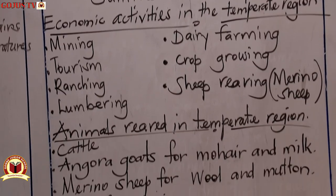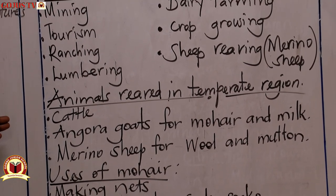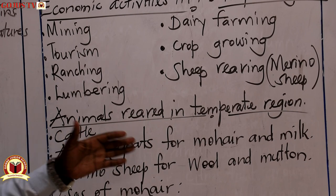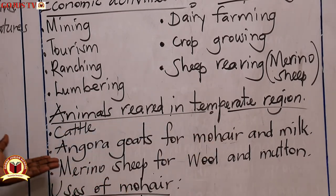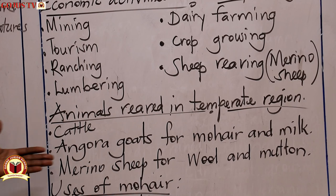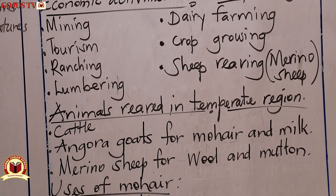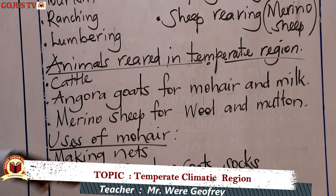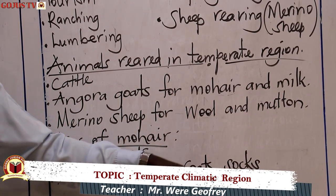Animals reared in this region include cattle. We have angora goats, which are basically for mohair and milk — they give a lot of milk. We have the merino sheep, which are basically for wool and mutton. Now, what are some of the uses of mohair? From mohair we make nets, sweaters, crops, coats, and socks.